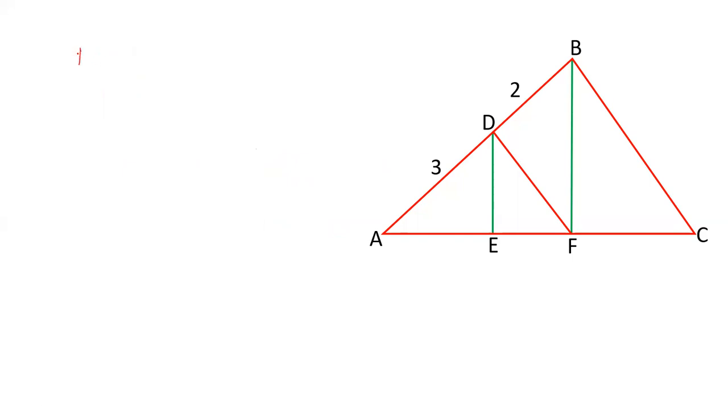It is given that AD upon DB is 3 is to 2. And it is also given that DE is parallel to BF. So, we can say that AE upon EF is also 3 is to 2 by basic proportionality theorem. AD upon DB is equal to AE upon EF.